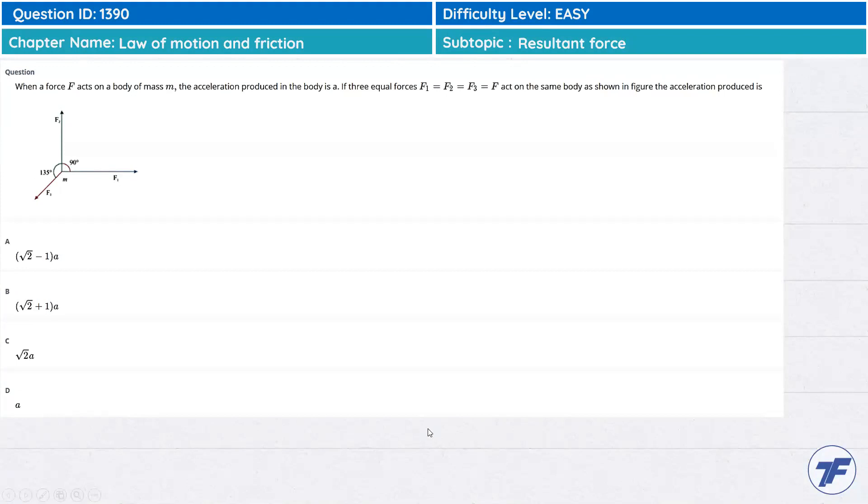When a force F acts on a body of mass m, the acceleration produced in the body is a. If three equal forces act on the same body as shown in the figure, the acceleration is... You can see forces in this direction F1, force in direction F2.